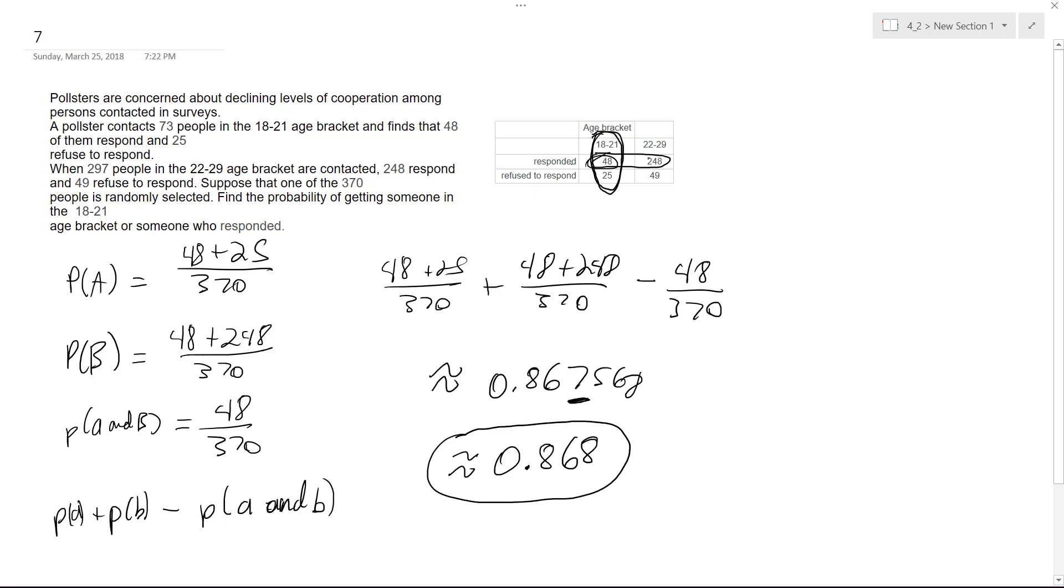The reason we have to do all this complicated math is because the responded 18 to 21 and 22 to 29 overlap.